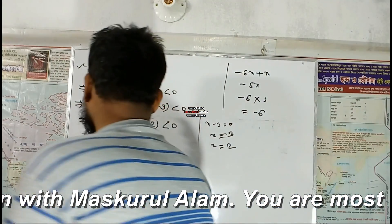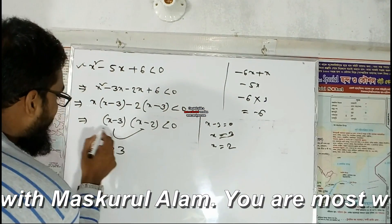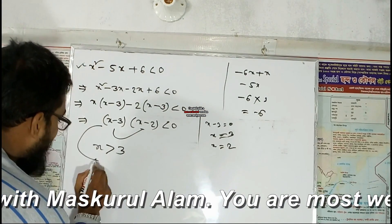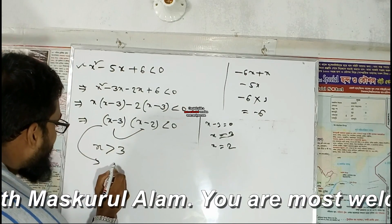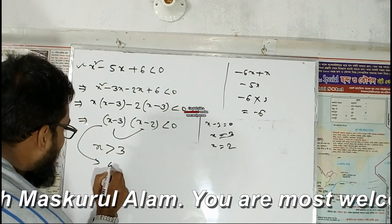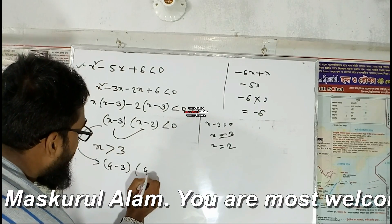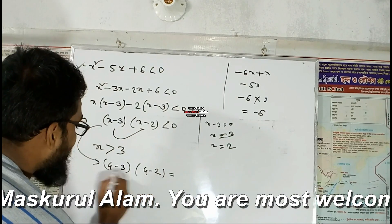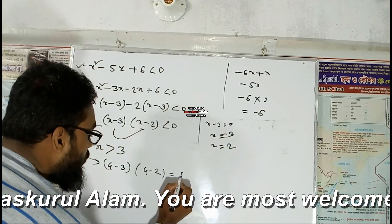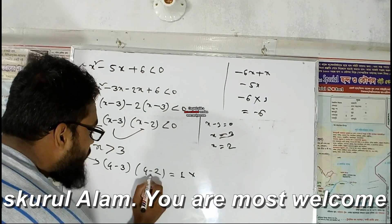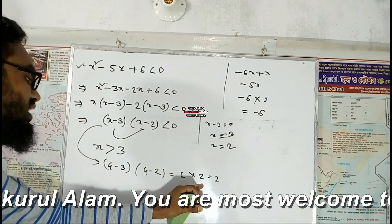Similarly from x minus 2 equals zero, we will get x equals 2. So x equals 2 is our other critical value.